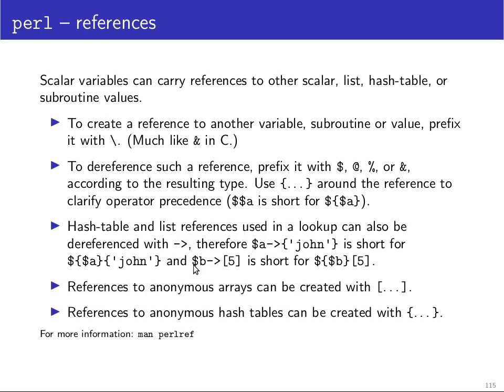And as I mentioned you can create anonymous arrays, arrays that haven't a variable name associated with them by putting square brackets around a list. And if you put curly braces around a list of key value pairs then you will get a reference to an anonymous hash table. So this is a somewhat quirky syntax but once you get used to it it actually works quite well, nothing to be afraid of.